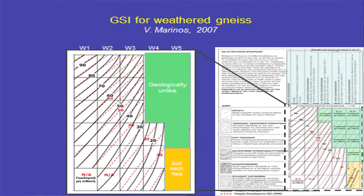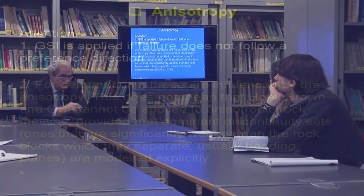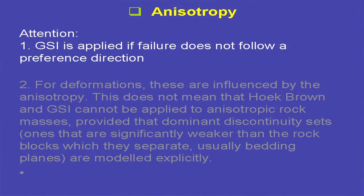There is a GSI chart developed in a PhD from many tunnels in gneiss and micaschists, with a shift of curves to address the weathering conditions of rocks like gneissic granites suffering from weathering. The columns follow the ISRM classification of weathering from sound to very weathered, with areas where this is not suggested or cannot be found in practice. Anisotropy is the most important issue.